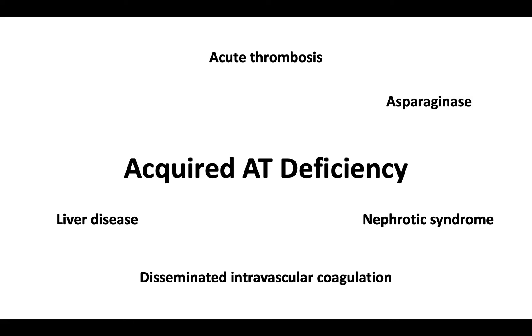Let's look at causes of acquired antithrombin deficiency. Antithrombin activity can be low in the setting of acute thrombosis, disseminated intravascular coagulation, liver disease, nephrotic syndrome, asparaginase therapy, and vitamin K antagonists.